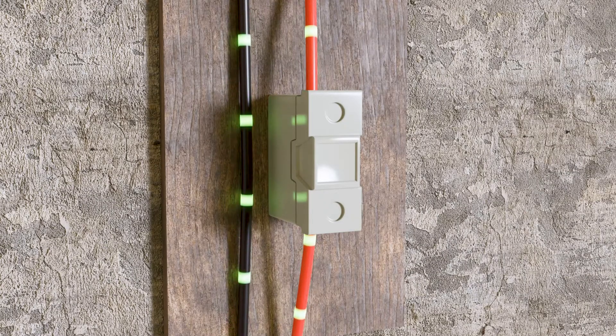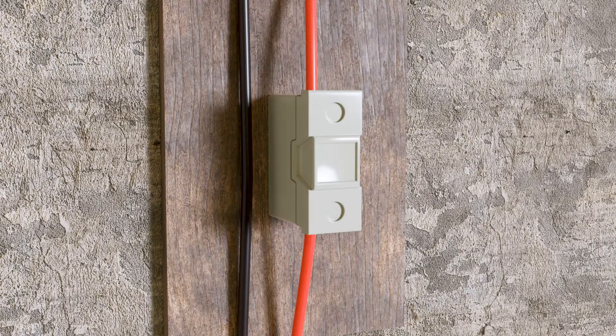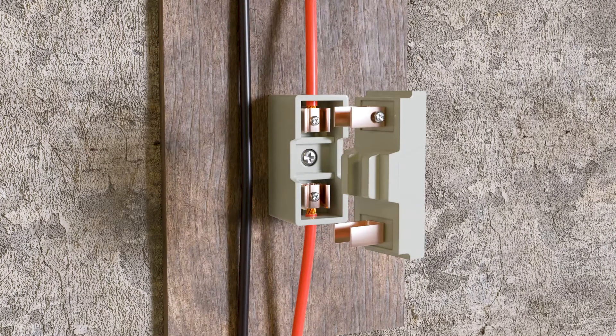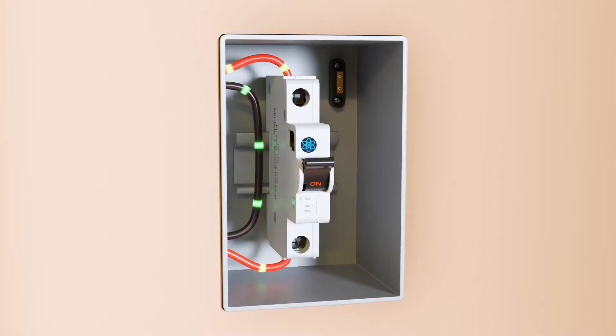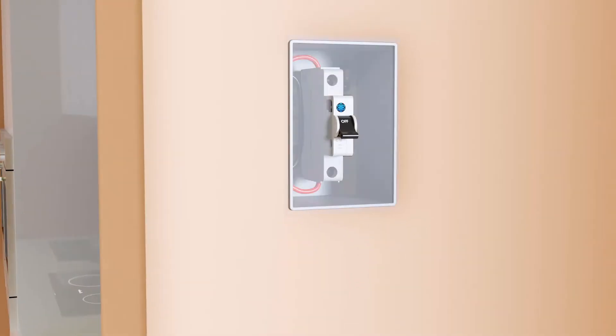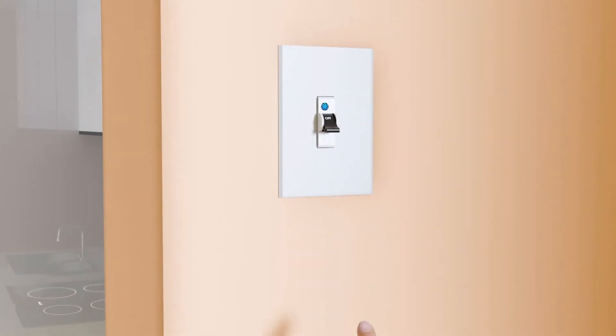The main downside of using a fuse is that whenever the fuse wire melts, we have to manually replace it with a new one. But in case of MCB, no such problem is faced. When a MCB trips due to a fault, we can easily switch it back on after fixing the problem.